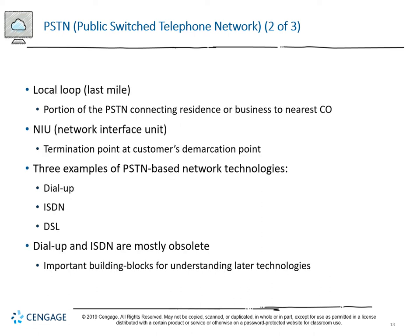The last loop, or last mile, sometimes called local loop, is the portion of the PSTN that connects the residence or business to the nearest CO. Driving down 17th Street you'll see little orange or tan tubes or metal boxes - sometimes with an AT&T sticker - which are routing stations going to your nearest CO, branching off to local residences. The NIU, or Network Interface Unit, is the termination point at the customer's demarcation. Three PSTN network technologies still dealt with today, though mostly obsolete, are dial-up, ISDN, and DSL. DSL is still used because it's the cheapest way to get a dedicated service line.